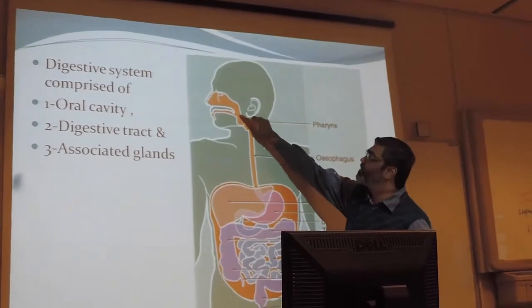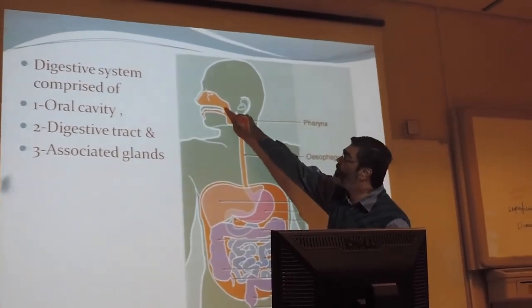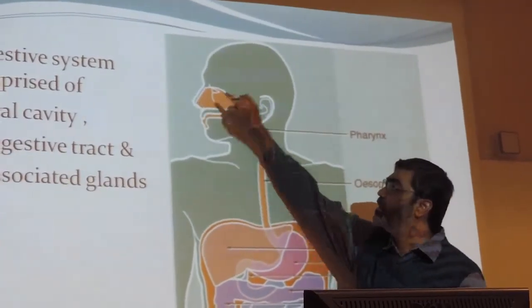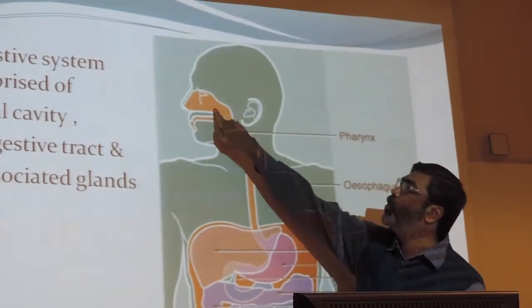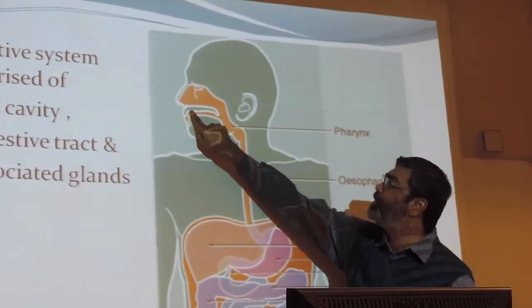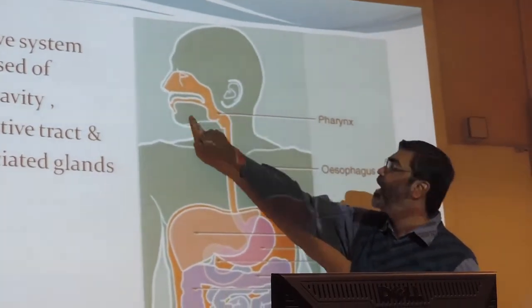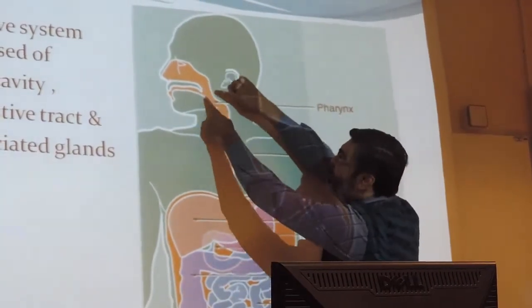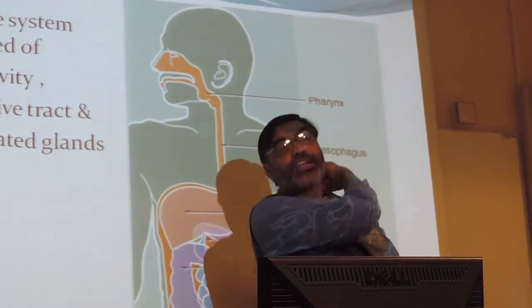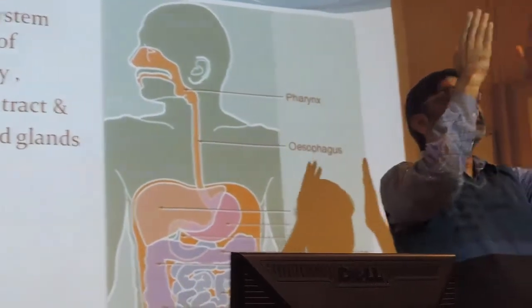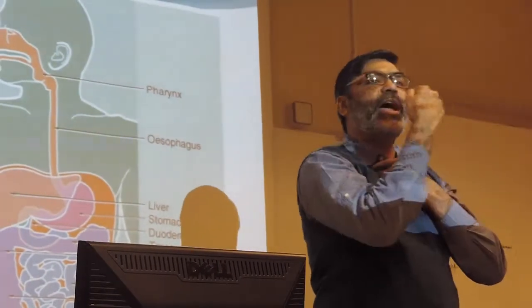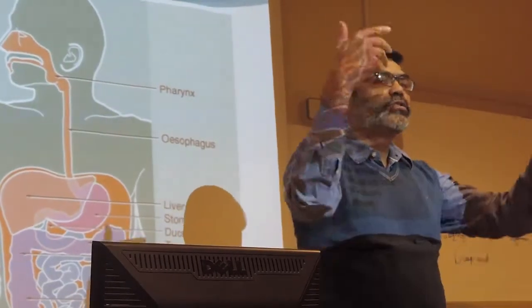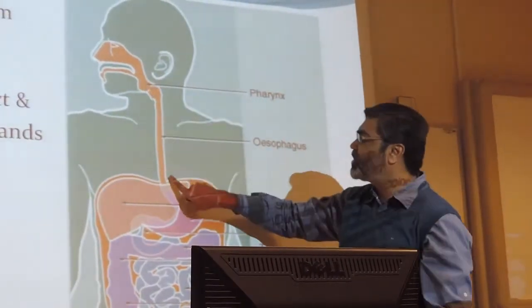This is the digestive tract, starting from the oral cavity, then the pharynx. The pharynx is a big structure with three parts: the part behind the nose is called nasopharynx, the part behind the oral cavity is oropharynx, and the part behind the larynx is laryngopharynx. So pharynx is whatever is present on the back of our oral cavity, extending behind the nose, oral cavity, and larynx.